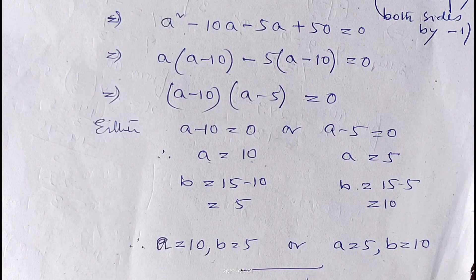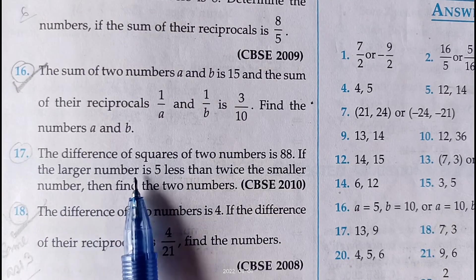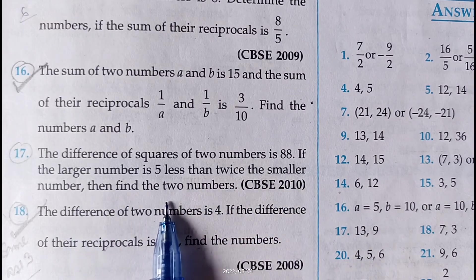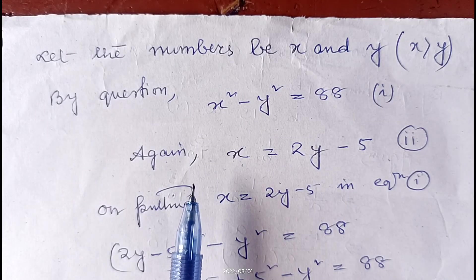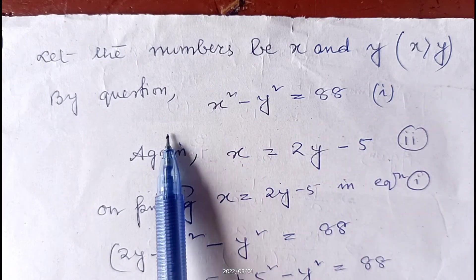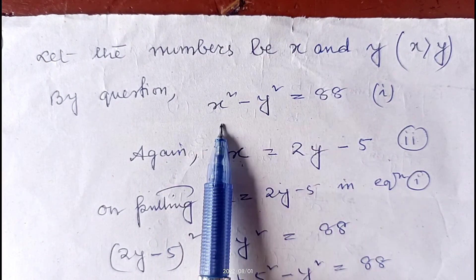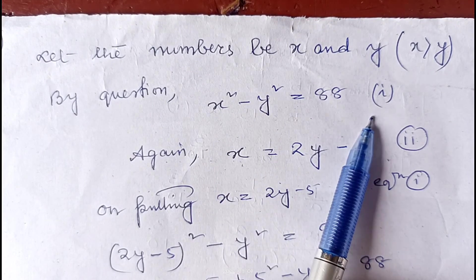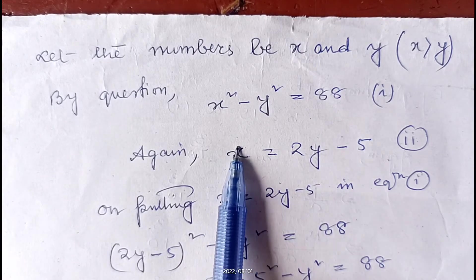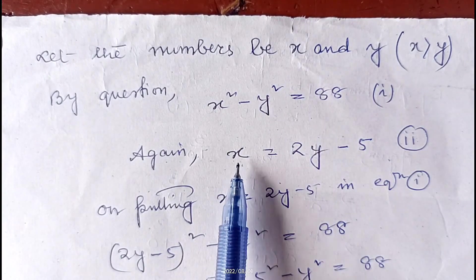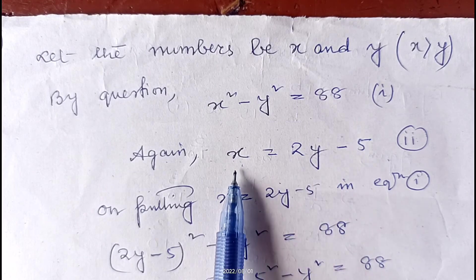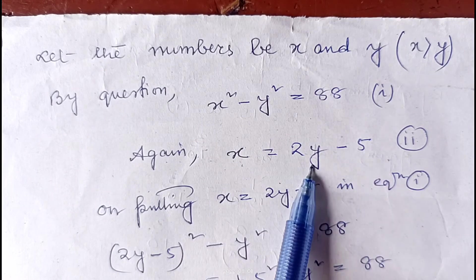Now in question number 17: the difference of squares of two numbers is 88. If the larger number is 5 less than twice the smaller number, find the two numbers. Let the numbers be x and y, with x greater than y. So x² − y² = 88 — let it be equation number one. The second equation: the larger number x equals twice y minus 5.